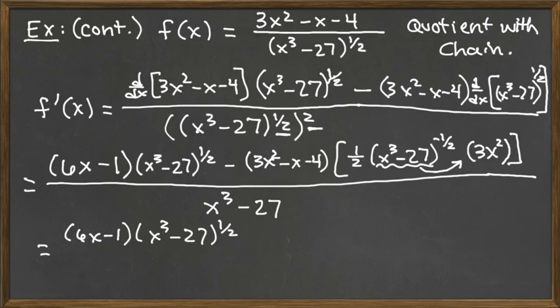We would have the 6x minus 1 times the x cubed minus 27 to the 1 half. Let's just leave that as is. But then we've got this – everything that follows the subtraction sign there is multiplied together.